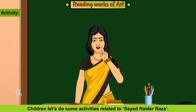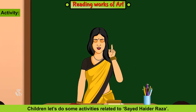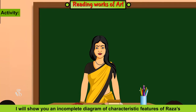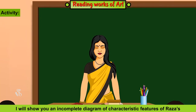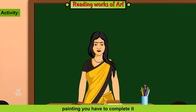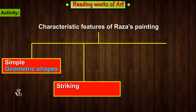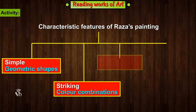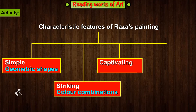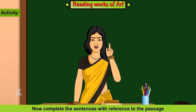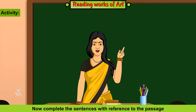Now let's do some activities related to Saeed Haider Raza. I will show you an incomplete diagram of characteristic features of Raza's paintings and you have to complete it. The answers are: Simple Geometric Shapes, Striking Colour Combinations, Captivating Compositions, and Colours Blue and Orange.